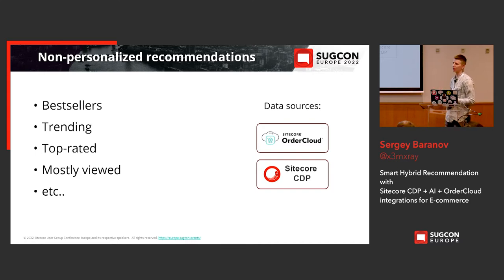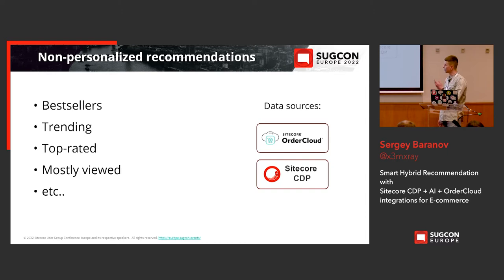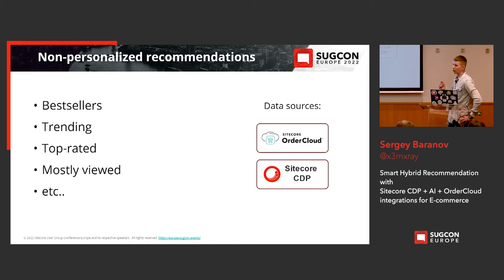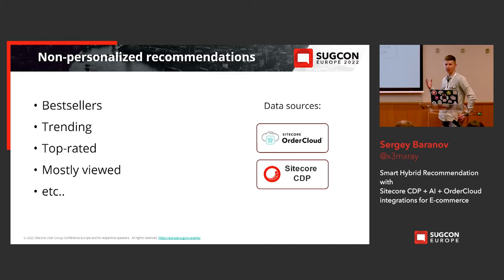Where can you find data for these types of recommendations? If you have integration with OrderCloud, the best option is to use OrderCloud to extract the history of checkouts and calculate bestsellers, trending, and recently viewed items. And if you have integration with Sitecore CDP, you can use tools that Sitecore Customer Data Platform provides, like the Data Lake Export Service.